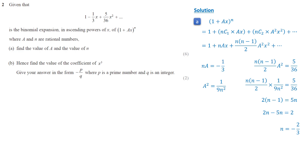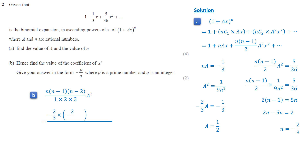We substitute n equals negative 2 over 3 into the first equation: negative 2 over 3 times a equals negative 1 over 3. Thus, a equals 1 over 2. Moving on to part b, the coefficient of x cubed is n(n−1)(n−2)/(1·2·3) times a cubed. Substituting n equals negative 2 over 3 and a equals 1 half, we find the coefficient of x cubed is negative 5 over 81.